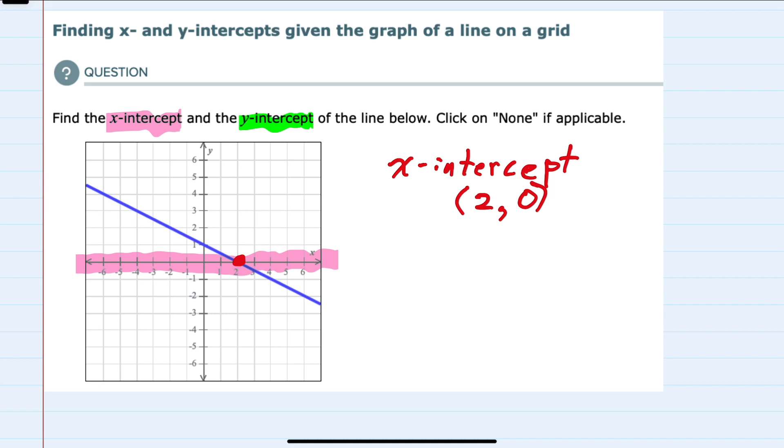And then for the y-intercept, we'll look at where the line crosses the y-axis. And this happens here, which is the point (0, 1). And again, notice that for the y-intercept, the x-value is 0, meaning that it's on the y-axis.